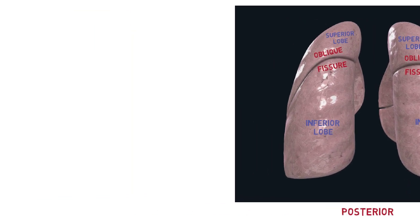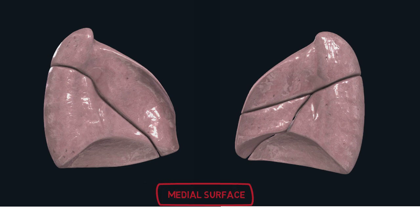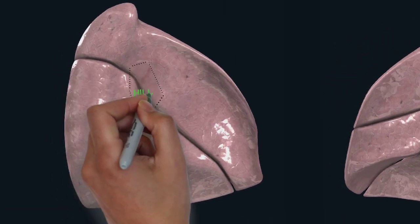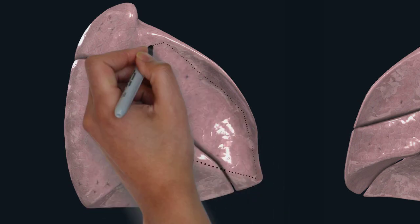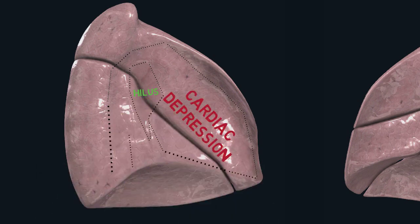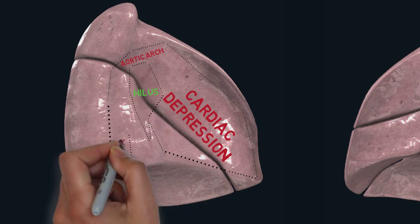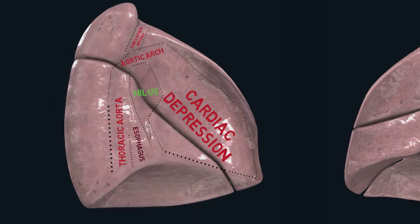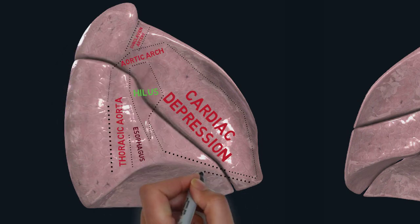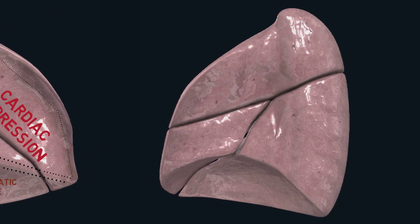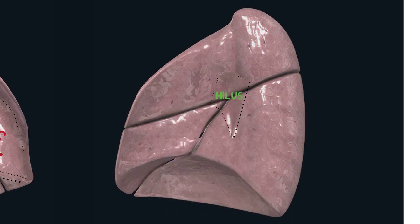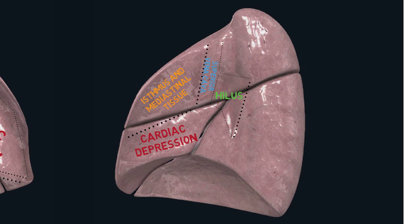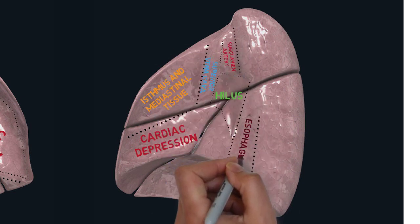Looking at the medial surface of the lung, the area where major vessels enter into the lung is called the hilum, and the left lung has a wide concave area occupied by the heart, called the cardiac depression. There are also other grooves, for example for the aortic arch, for the thoracic aorta or descending aorta, and the esophagus just right next to it. A smaller groove just above the aortic arch is for the left subclavian artery. The right lung also has some similar structures with exceptions: the cardiac depression here is less prominent as the heart sits on the left side of our body. There is also depression caused by the azygos vein and superior vena cava, and grooves for the subclavian artery and esophagus are also present.